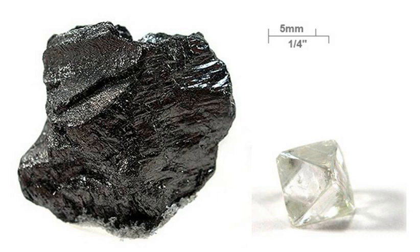Some meteorites contain microscopic diamonds that were formed when the Solar System was still a protoplanetary disk. Microscopic diamonds may also be formed by the intense pressure and high temperature at the sites of meteorite impacts. In 2014, NASA announced a greatly upgraded database for tracking polycyclic aromatic hydrocarbons in the universe. More than 20% of the carbon in the universe may be associated with PAHs, complex compounds of carbon and hydrogen without oxygen. These compounds figure in the PAH world hypothesis where they are hypothesized to have a role in abiogenesis and formation of life.